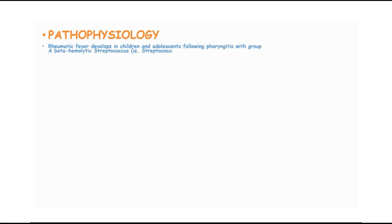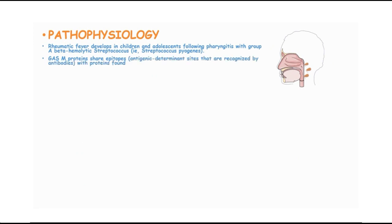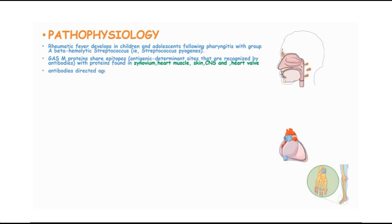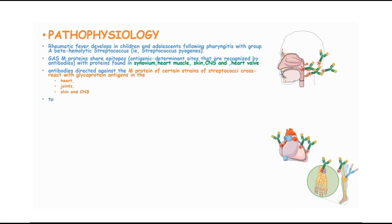In the pathophysiology, rheumatic fever develops in children and adolescents following pharyngitis with group A beta-hemolytic streptococcal such as Streptococcus pyogenes. Group A streptococcal M proteins share epitopes or antigenic determinants which are recognized by antibodies with proteins found in the synovium, heart muscles, skin, central nervous system and heart valves. These antibodies directed against the M protein cross-react with glycoprotein antigens in the heart, joints, skin and central nervous system to produce an immune response through a phenomenon called molecular mimicry, leading to an autoimmune response.